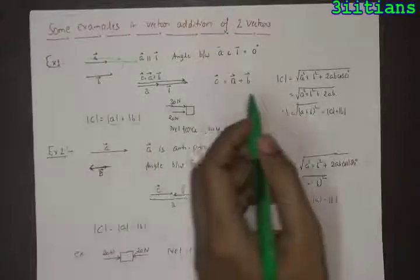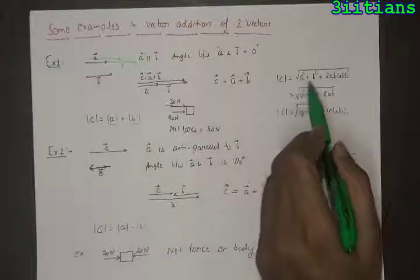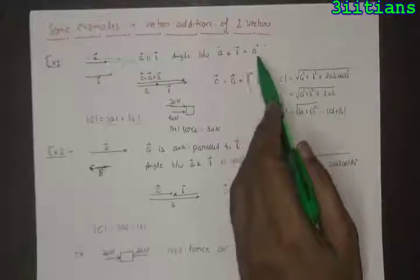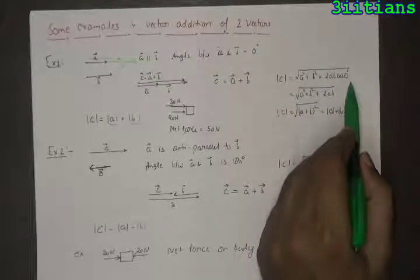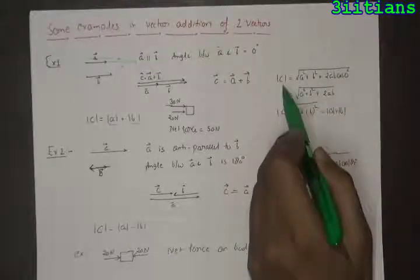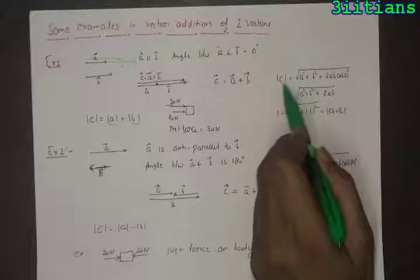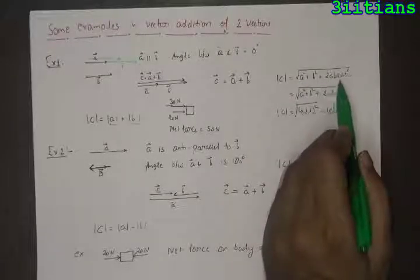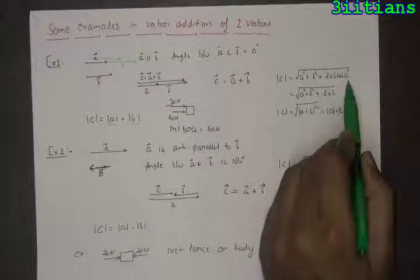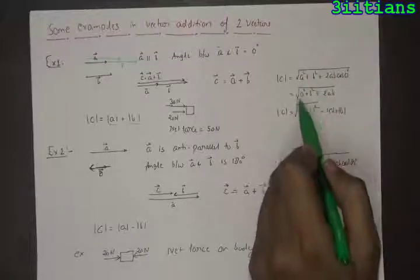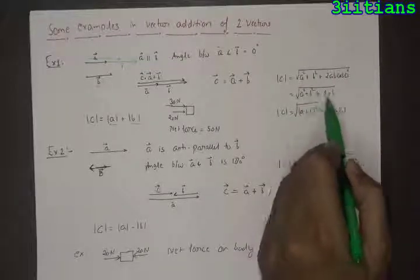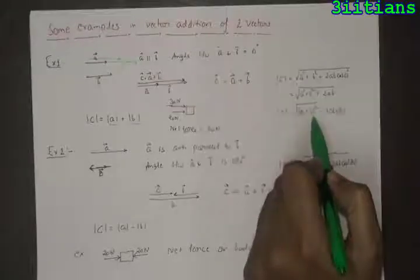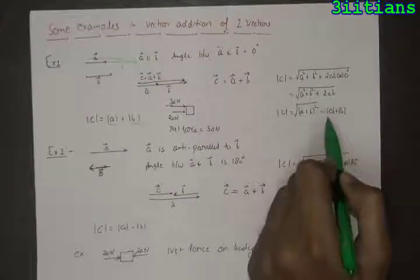This is the same result we get from the formula. When we place theta equal to 0, the magnitude of c vector will become equal to the square root of a squared plus b squared plus 2ab cos 0. Since cos 0 equals 1, this gives a squared plus b squared plus 2ab, which is (a + b) whole square under root, or simply a plus b.